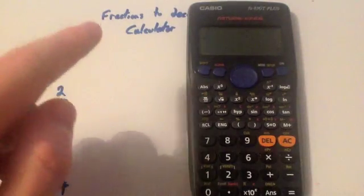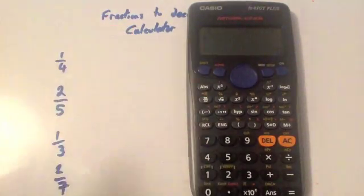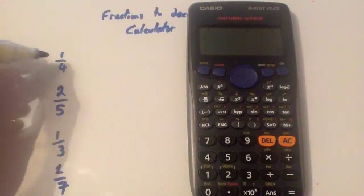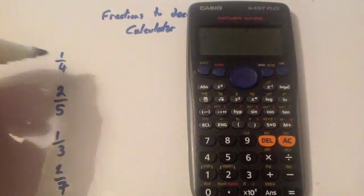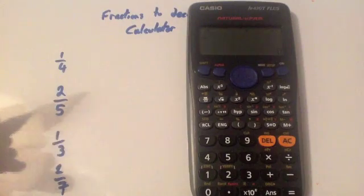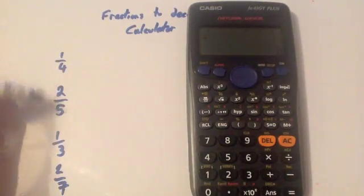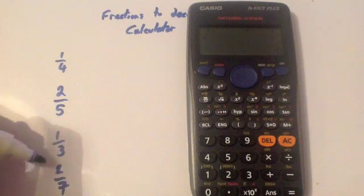In this video we're going to look at how to convert from fractions to decimals by using your calculator. So we're going to do four fractions just to show you how to do it. We're going to do a quarter, you should know that already, it's 0.25. But I just want to show you how to do it using your calculator. We're going to do two fifths, one third, and two sevenths.